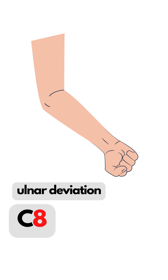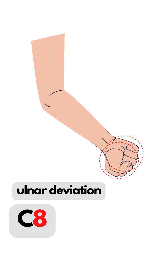Ulnar deviation — C8. We have the starting position: fingers fisted. Now that looks like a circle. Deviate the ulna and circle the fist in its new position. Now we have two circles, which make an 8.